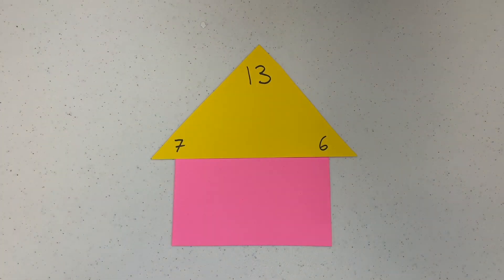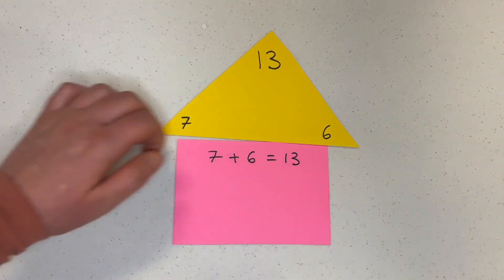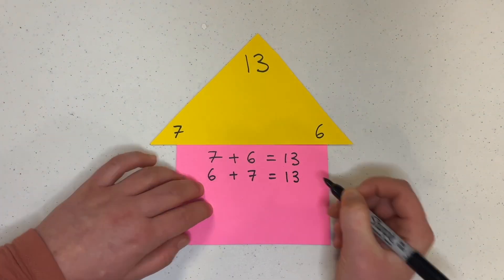On the roof they'll write the three numbers that make up the fact family. On the base have them jot down two addition and two subtraction facts related to those numbers.